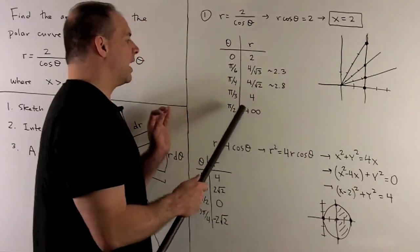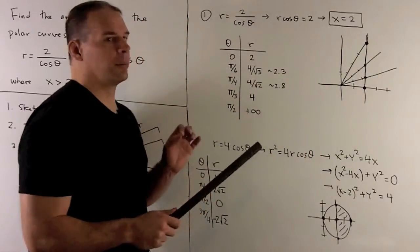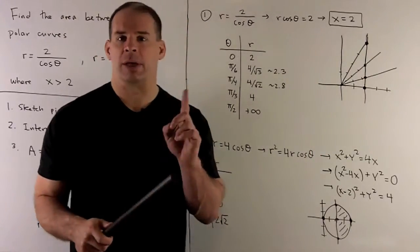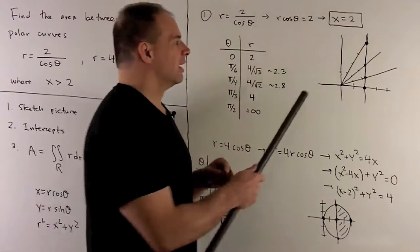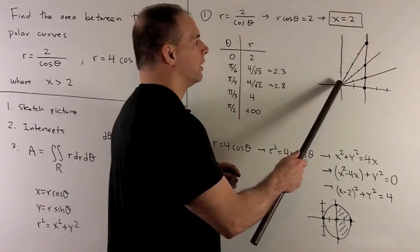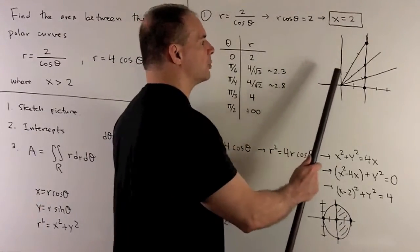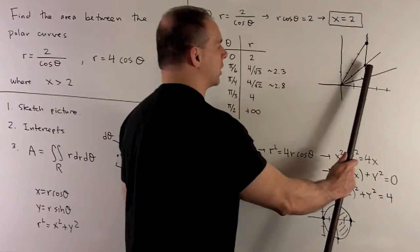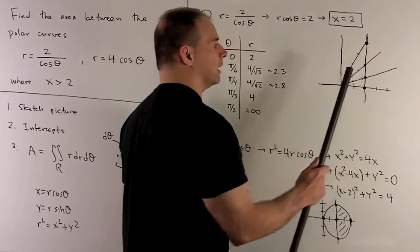At theta equals pi halves, we're going to get plus infinity, so there's no point that goes with that. That half-line is parallel to our actual line, so they never meet.